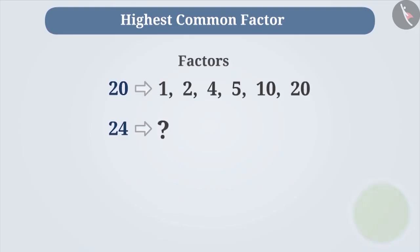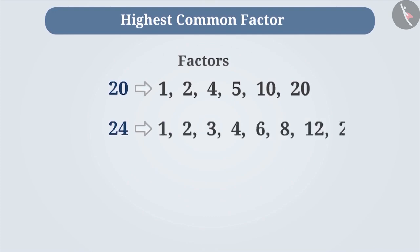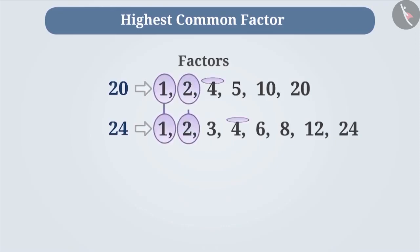You are right. The factors of 24 are 1, 2, 3, 4, 6, 8, 12 and 24. Among the factors of 20 and 24, the factors 1, 2 and 4 are common. We call them common factors of 20 and 24.